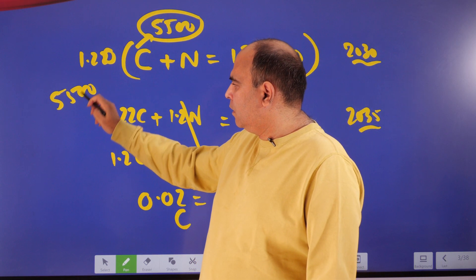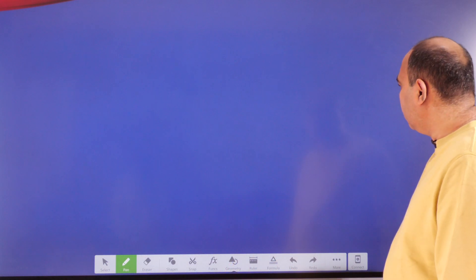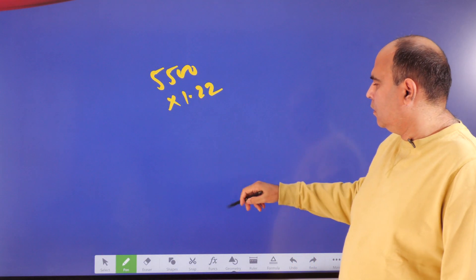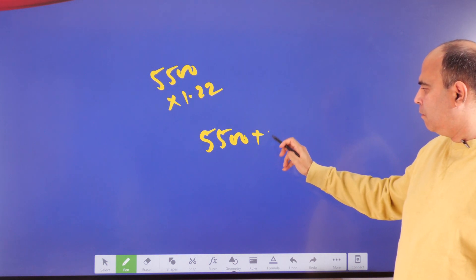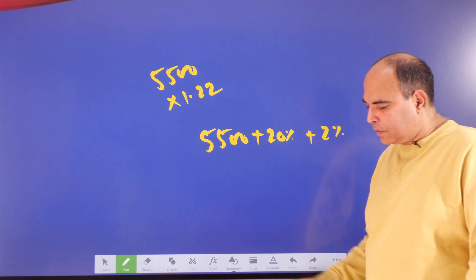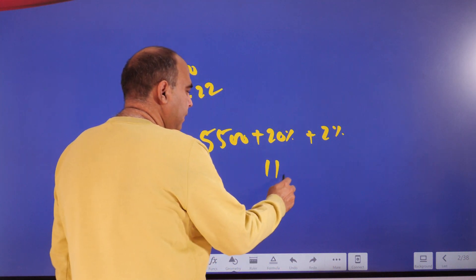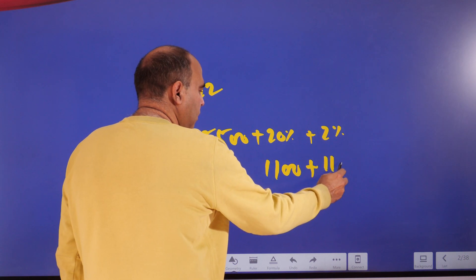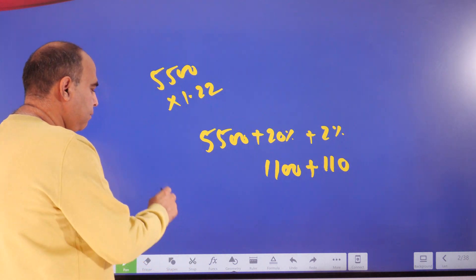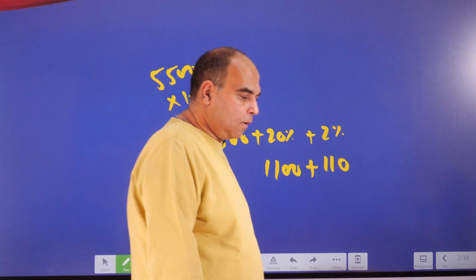That is 5,500 × 1.22. So 5,500 × 1.22 can also be thought of as 5,500 plus 20% plus 2%. 10% of 5,500 is 550, so 20% is 1,100. You can add 1,100 here, and 2% is 110 more, so you can add 110 more. So 1,210 gets added. The number of carnivorous animals in 2035 will be 6,710.